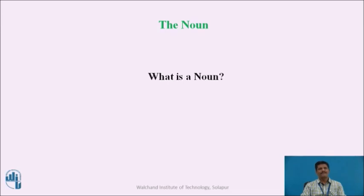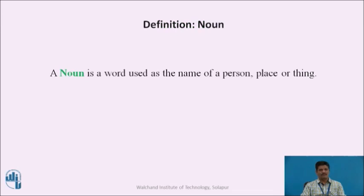Welcome back. Here is the answer to your question: what is a noun? A noun is a word used as the name of a person, place, or thing. In short, a noun names a person, place, or thing. This is a very simple definition of nouns.